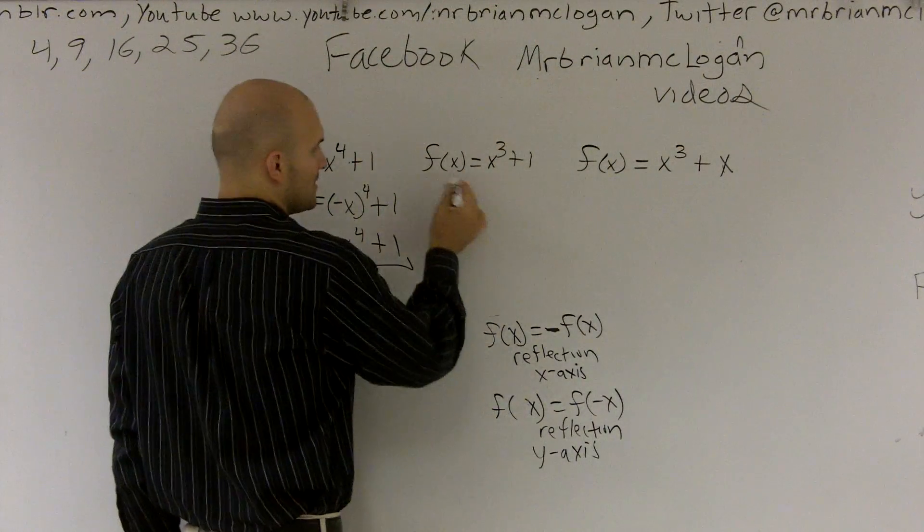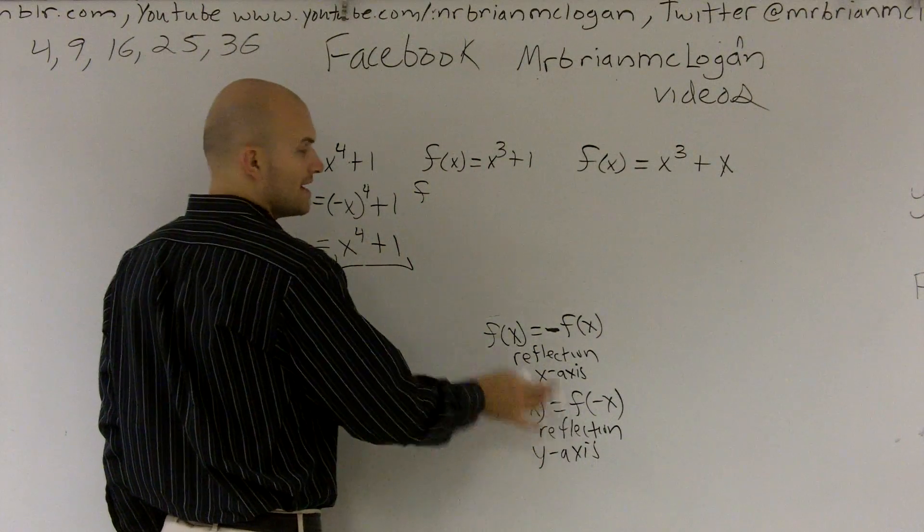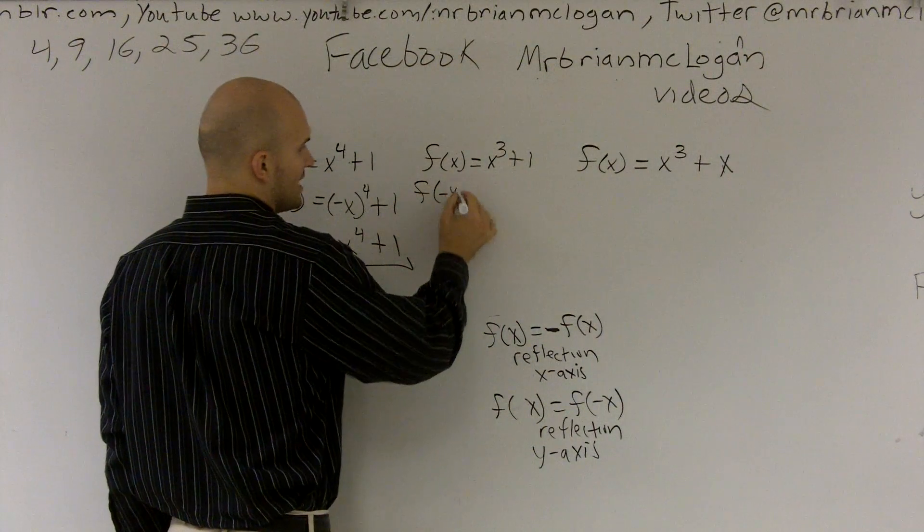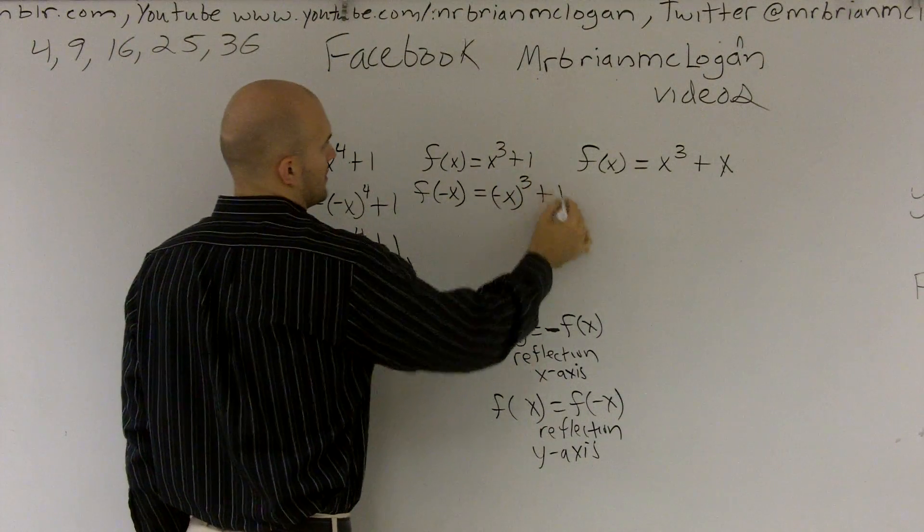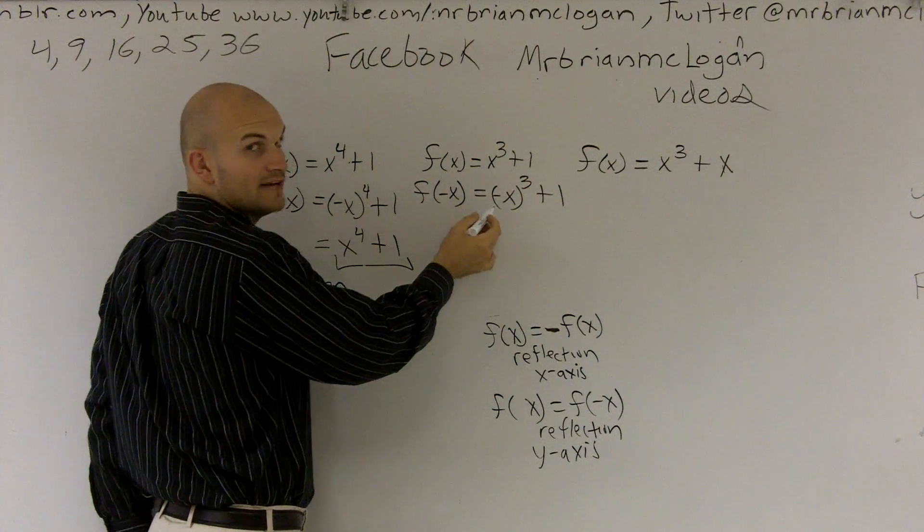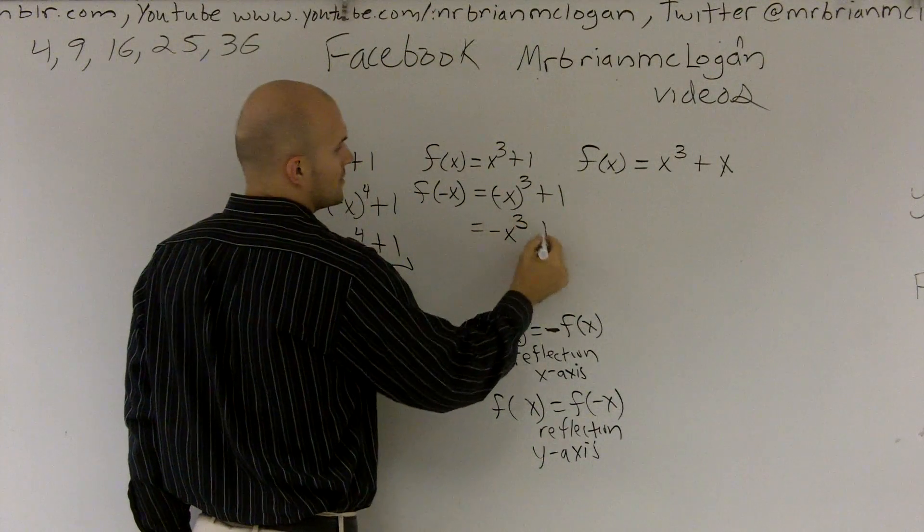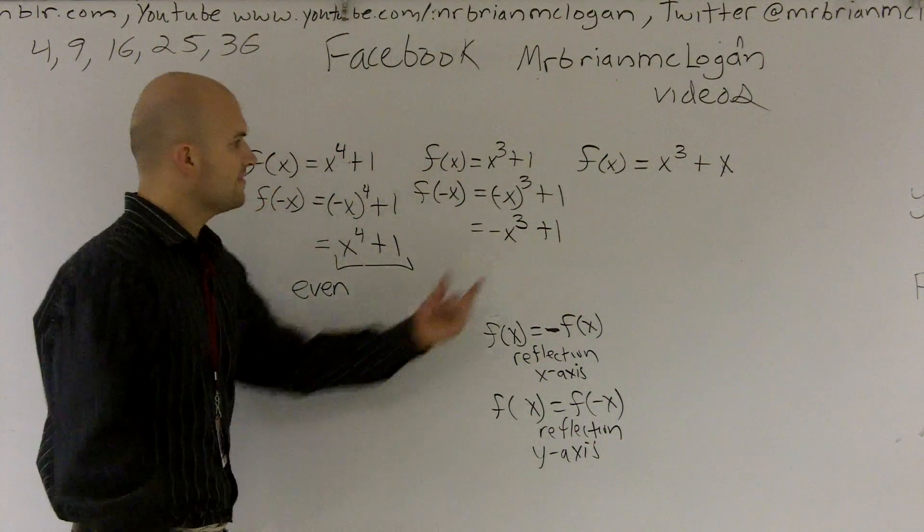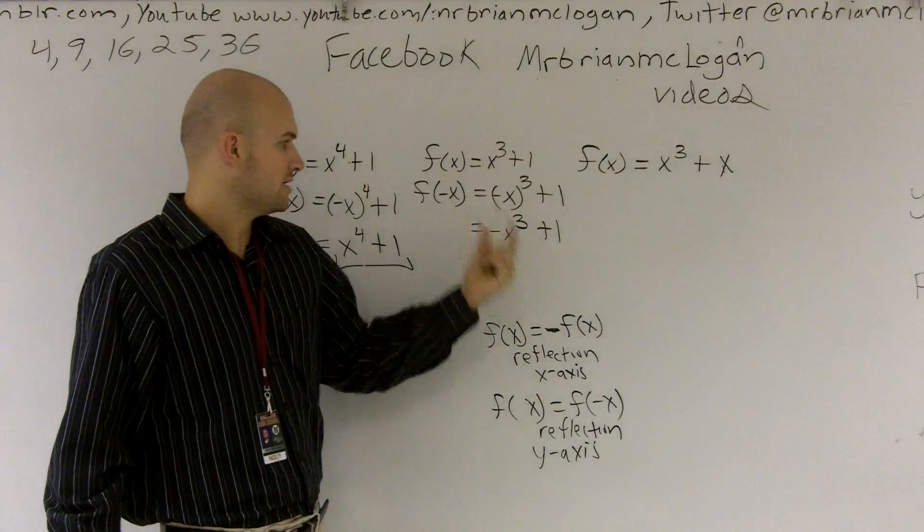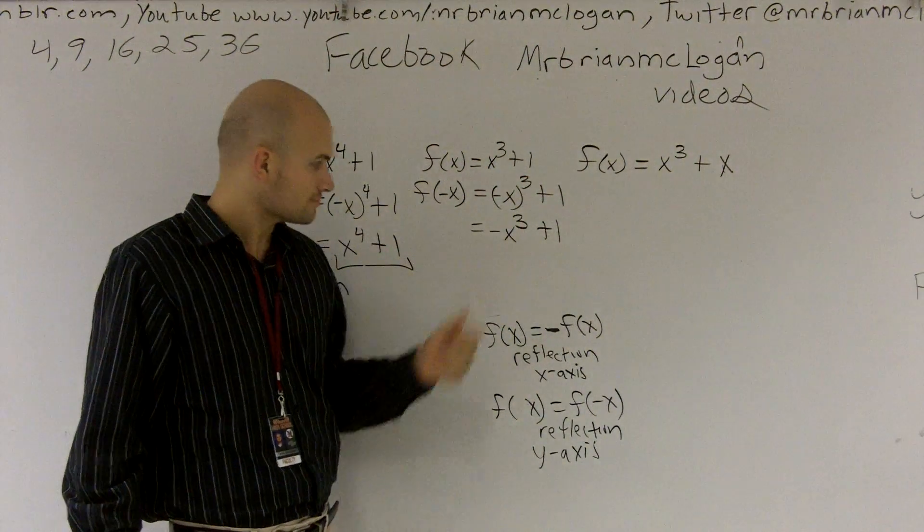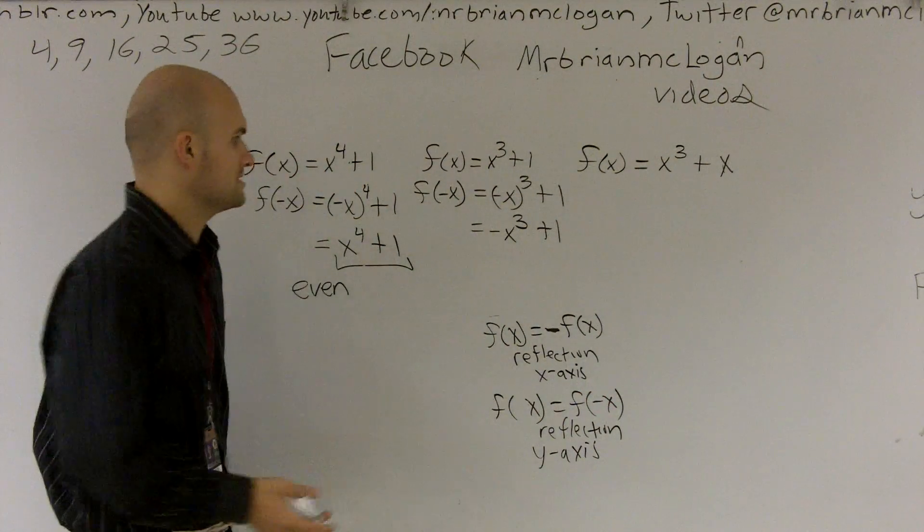On this problem, let's test first the y-symmetry. So I'm going to plug in negative x. When I have a negative number cubed, that's going to give me negative x cubed plus 1. This is not the same as my original function. So it is not symmetrical about the y, but let's see if it's symmetrical about the x.